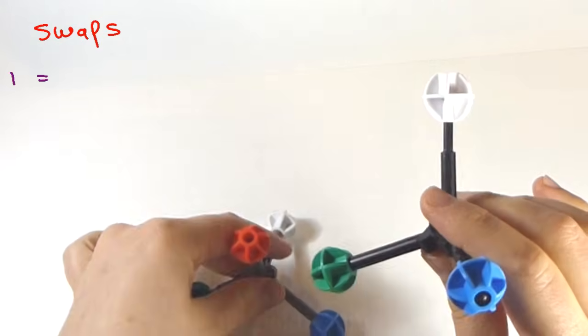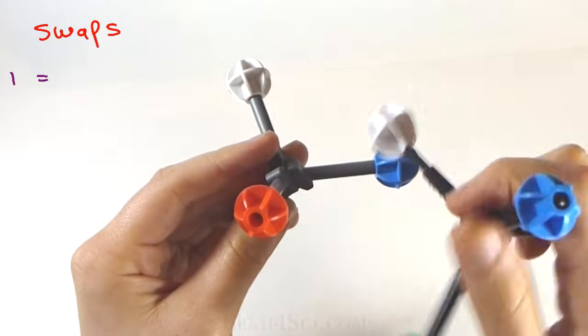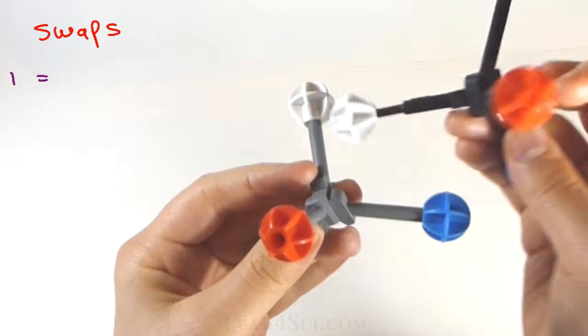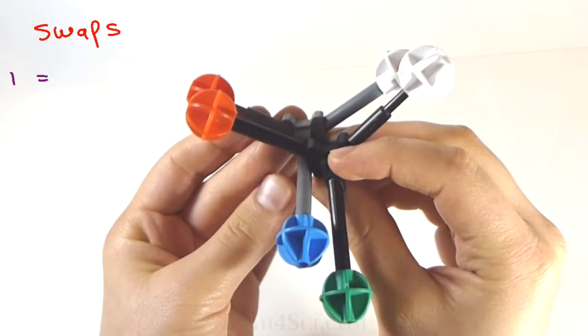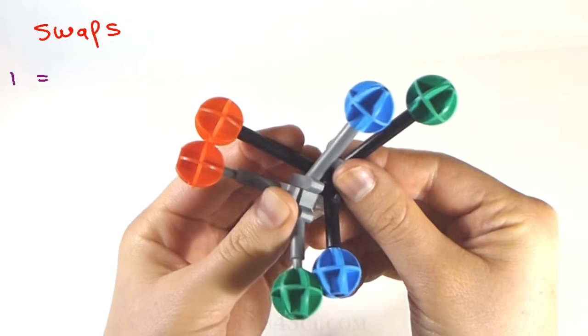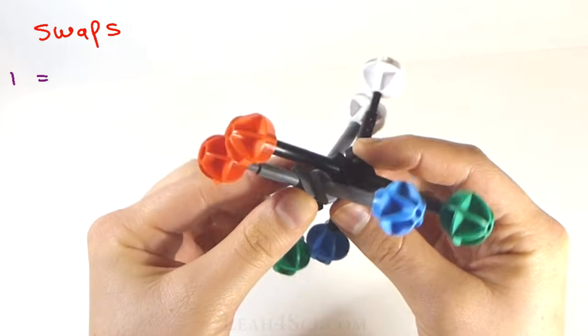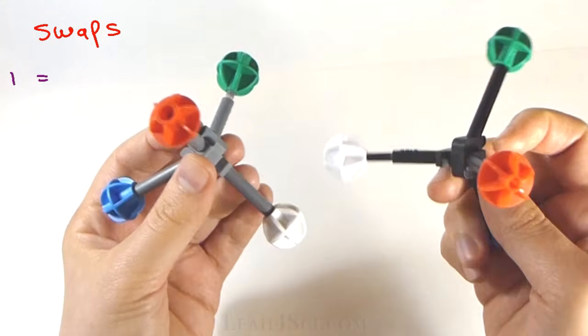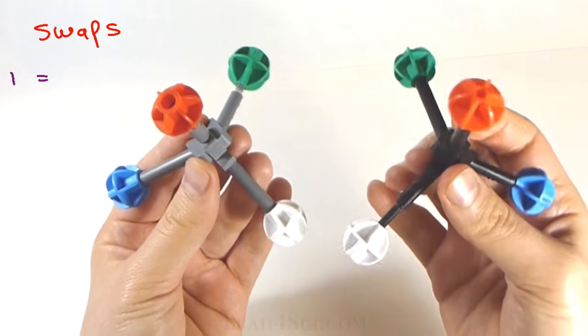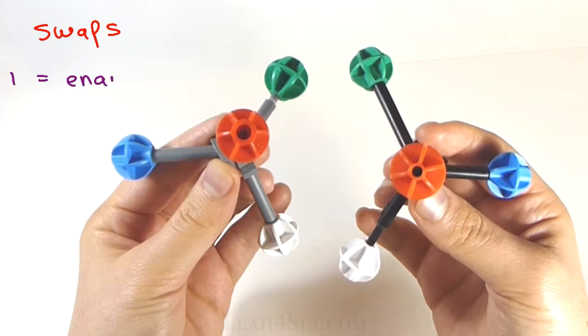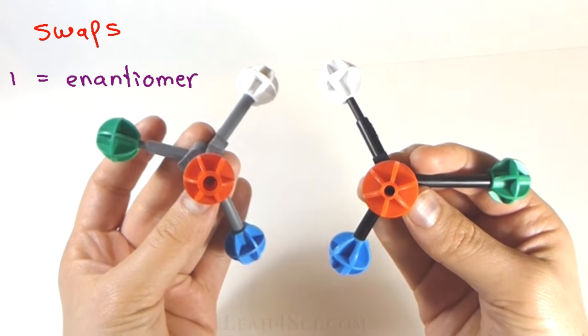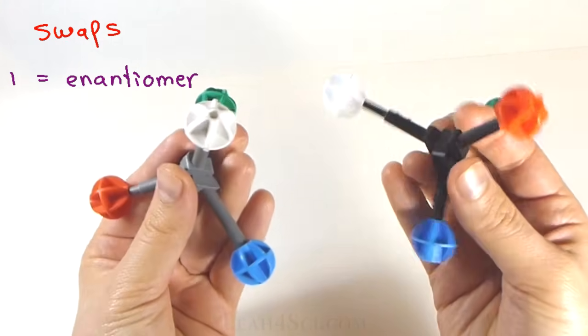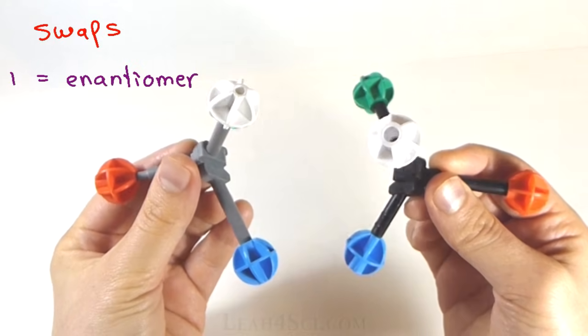We just did one swap, now let's see what happened. If we try to superimpose them, it doesn't work. The white and red are perfectly superimposable but the green and the blue are opposites. In fact, if I put them side by side and attempt to see a mirror between them, look at that, they're perfect enantiomers of each other. So we took a molecule that was exactly the same, swapped two random substituents and we got the enantiomer.